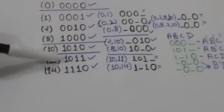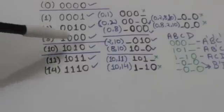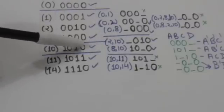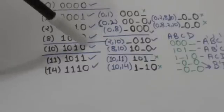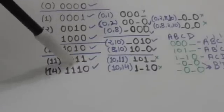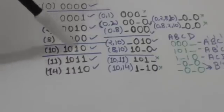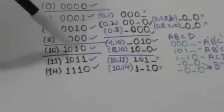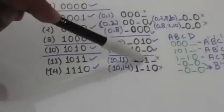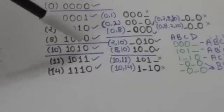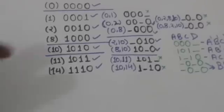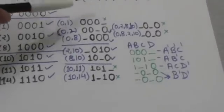Now comparing the two-ones group with the three-ones group: this number compared with this number — they differ only by the rightmost bit, so we place a dash and combine them. Comparing the next pair — they differ only by one bit, so I placed a dash and combined them. This term is formed by combining minterms 10 and 11, and this term is formed by combining 10 and 14.